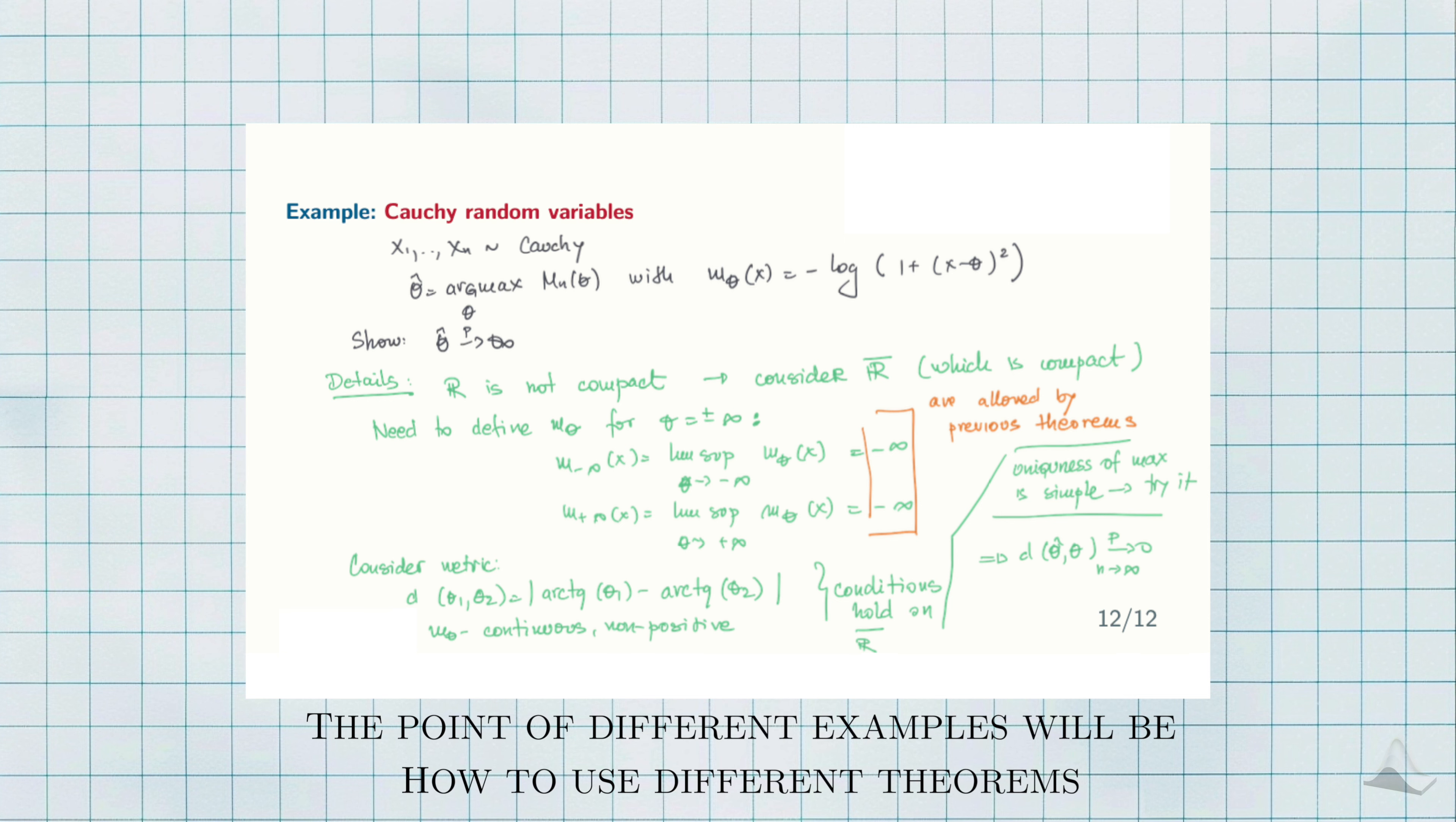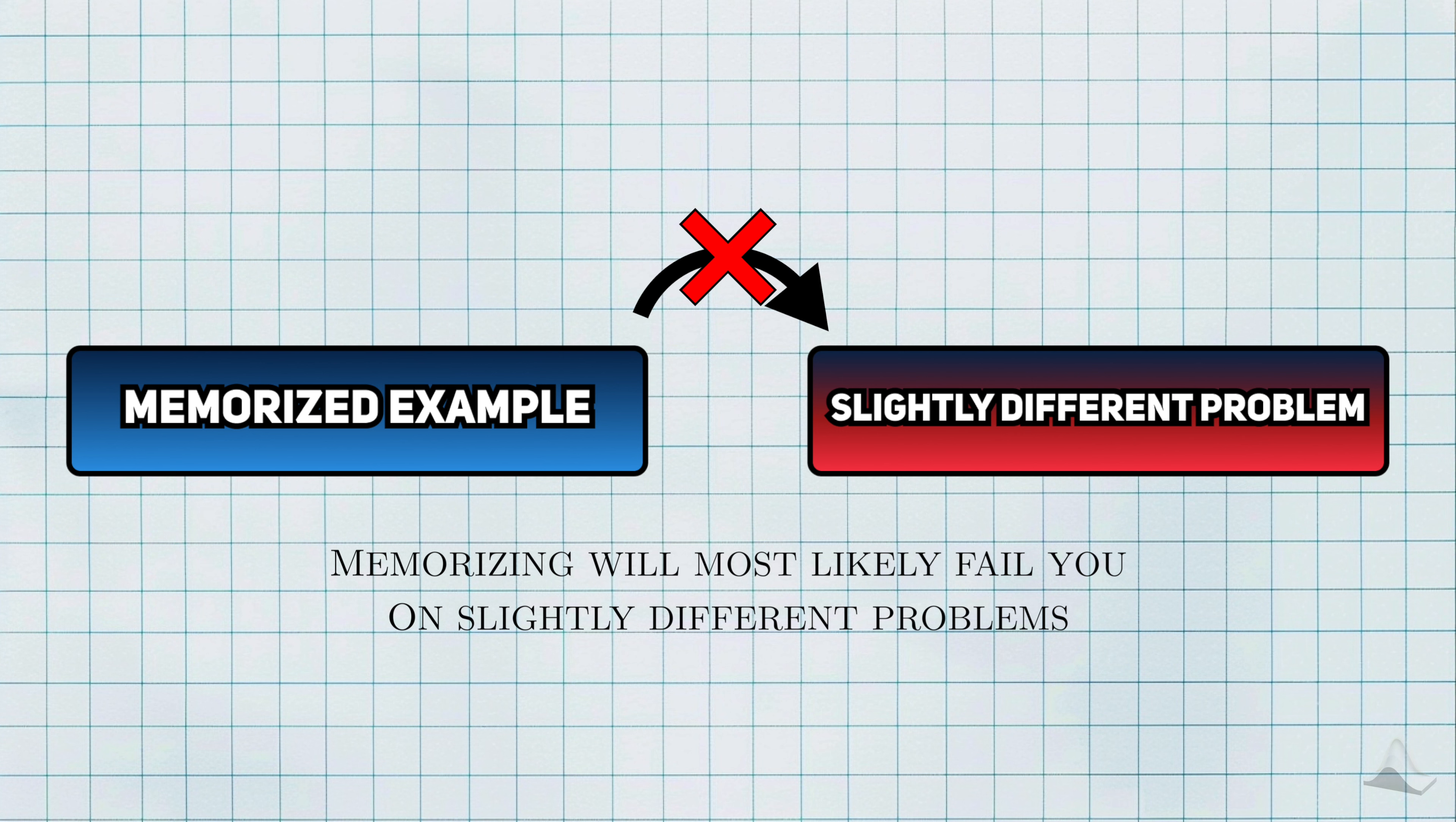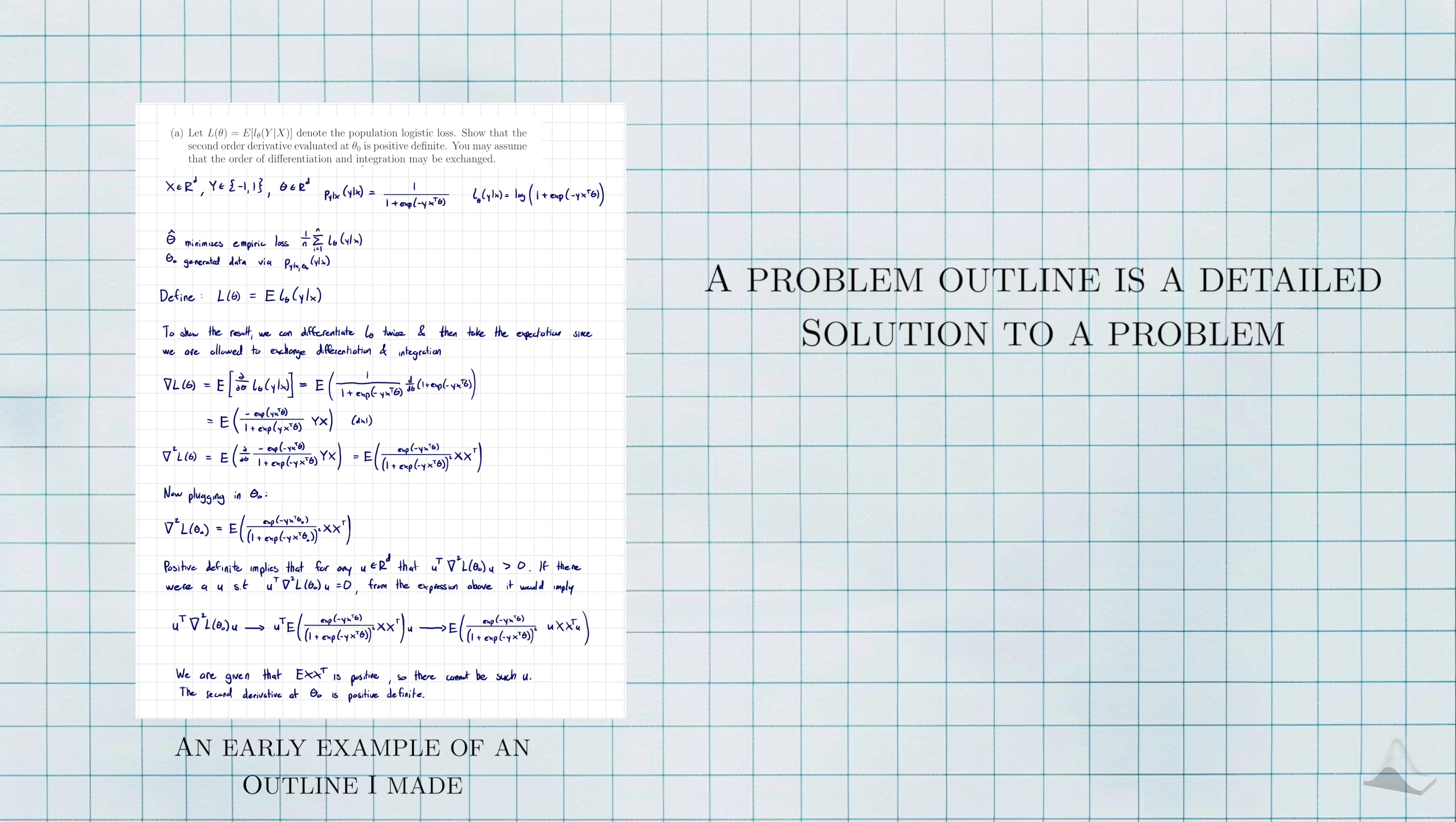Develop problem outlines. Hopefully there will be a lot of example problems you get through lecture and homework. And the point of these examples will be to demonstrate the use of a particular theorem. But once you work through it, it's really easy to fall into the trap of just memorizing how the problem is done. The problem with this approach is that it'll likely fail you when it comes to similar, but slightly different problems you might see in a qual. You have to learn to generalize from examples. And the way that I approached this was to develop problem outlines.